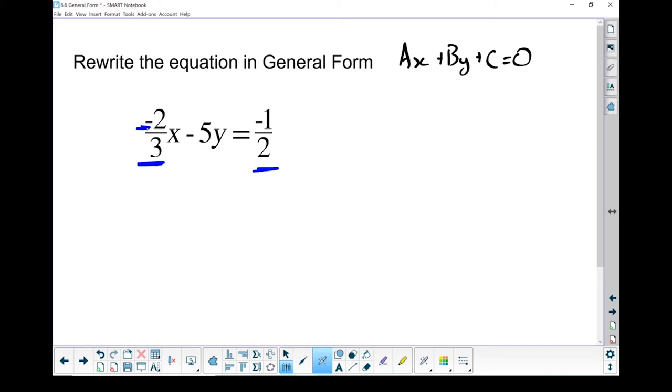It's got this negative sign in front of the two. That's our a value. That keeps it from being general form. And this term over here is on the wrong side of the equal sign. If you'll remember, our general form has to have a zero on the right-hand side of the equal sign. So let's deal with those one by one.